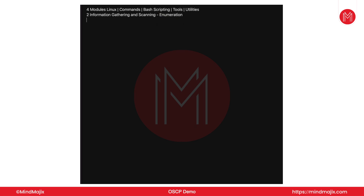Enumeration is basically the key for which we can work on further exploitation methods. Once it's done, our next module will be all about the Metasploit framework. I'm placing Metasploit on the 7th chapter because it can be used accordingly throughout the examination. In the OSCP exam you are only allowed to use Metasploit framework once, but you can use MSFvenom as many times as you want. Opening the Metasploit console is allowed only once, so you'll be using it for only one machine.